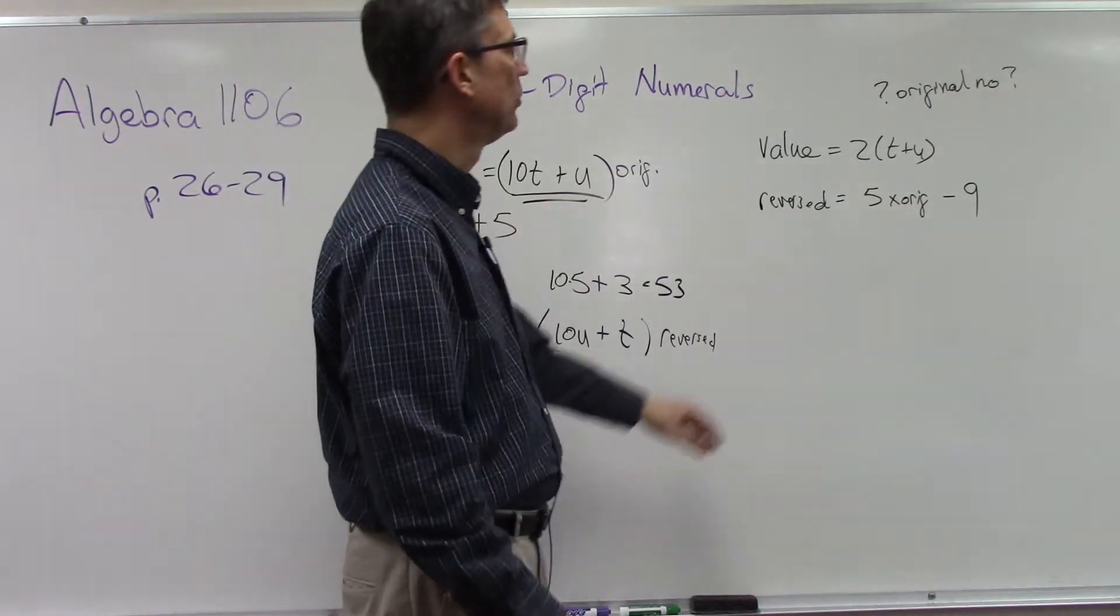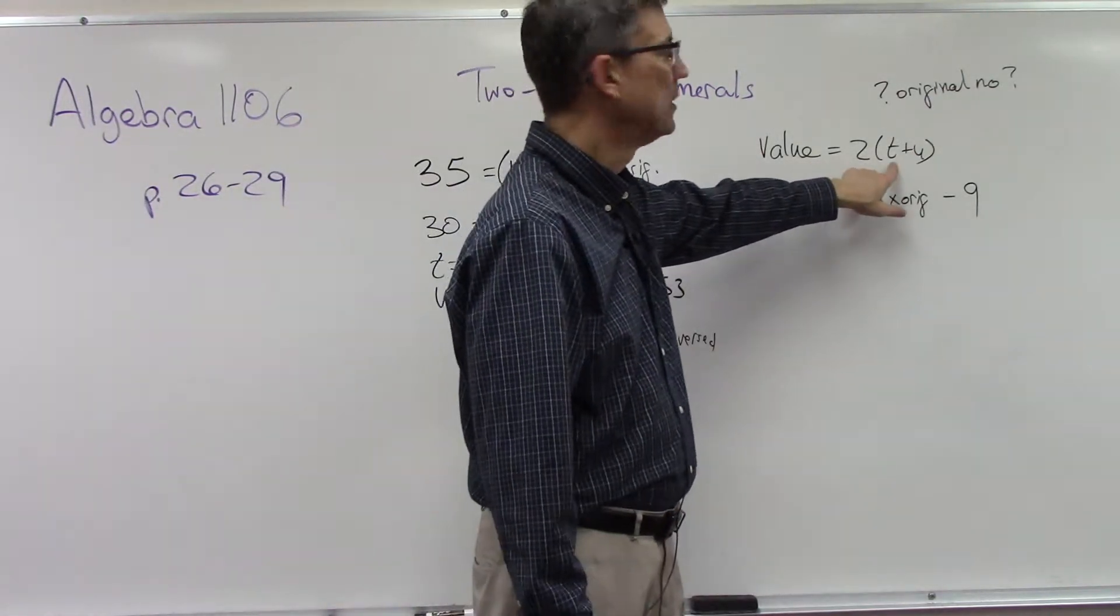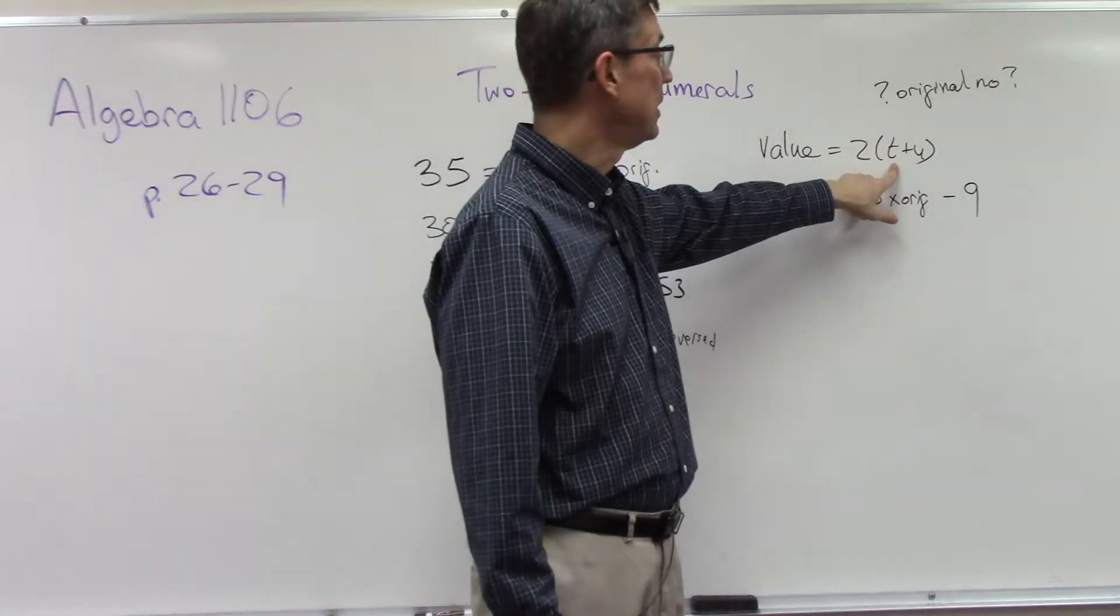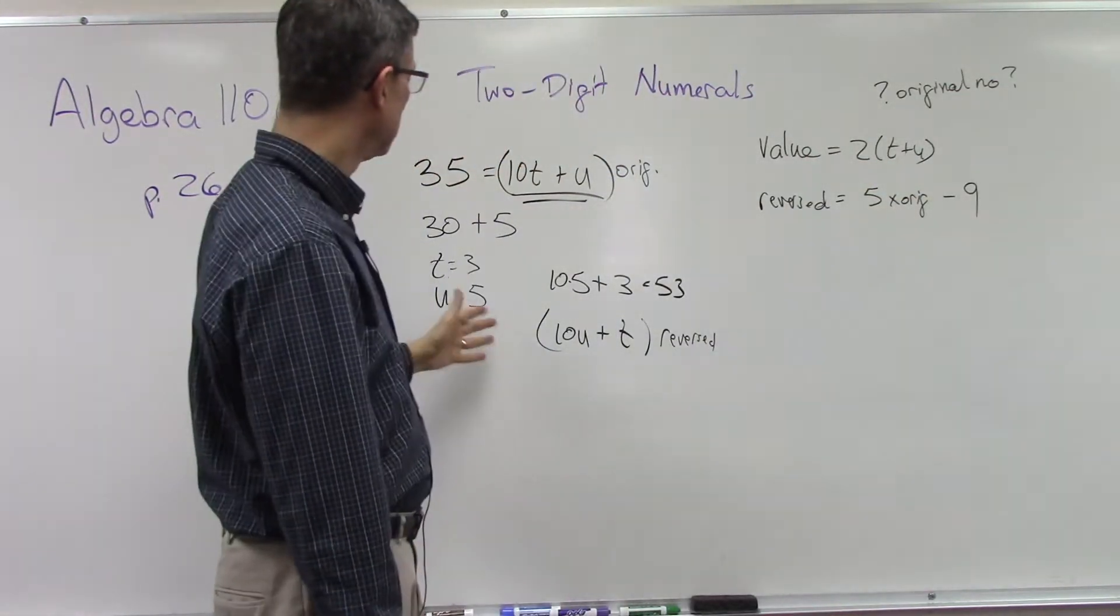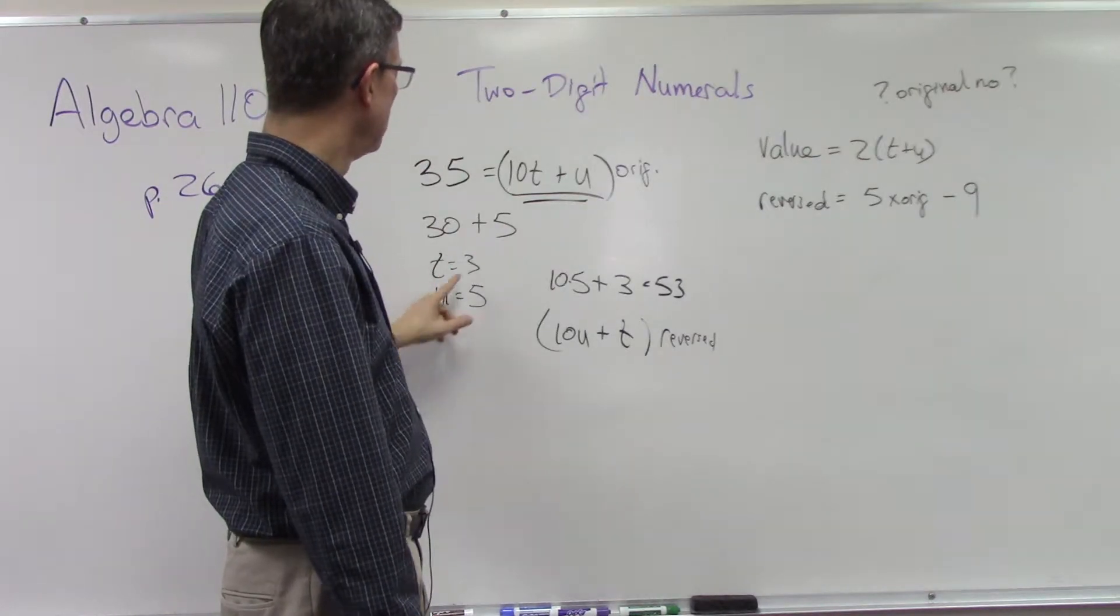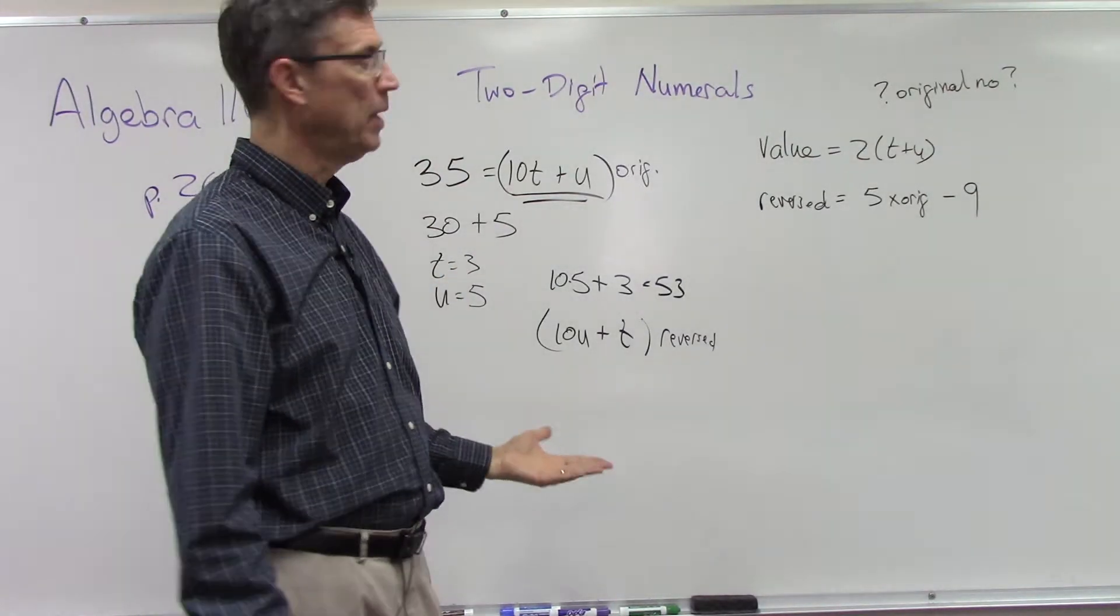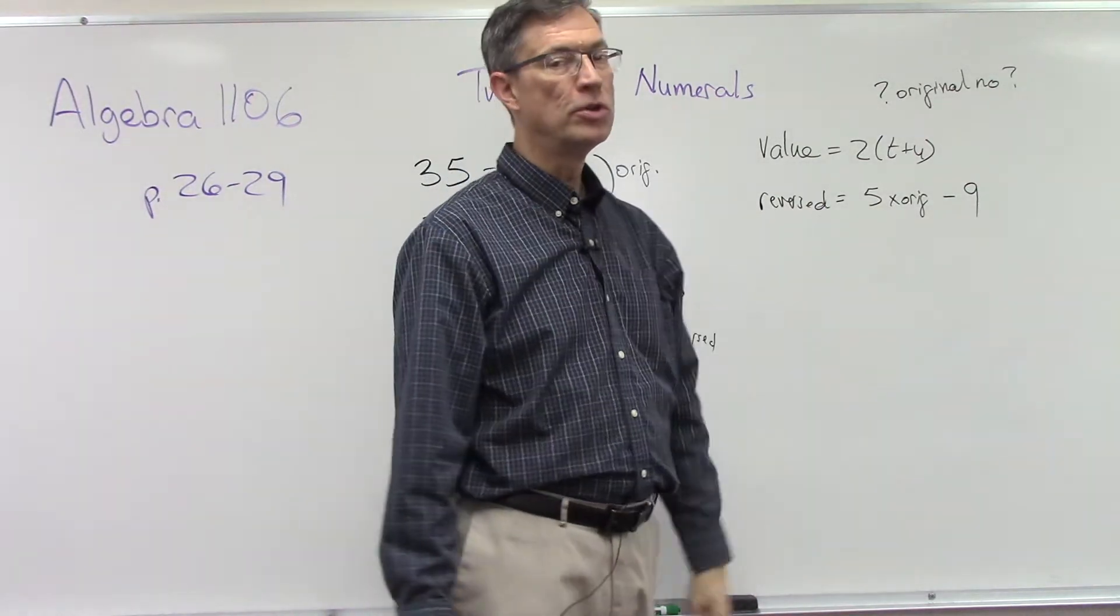Okay, well value means the original number, so that's this formula right here. So we could say the original number is equal to twice the sum, adding the tens digit by itself—just the digit—plus the units digit. In this case, the tens plus the units would be 3 plus 5, or 8.